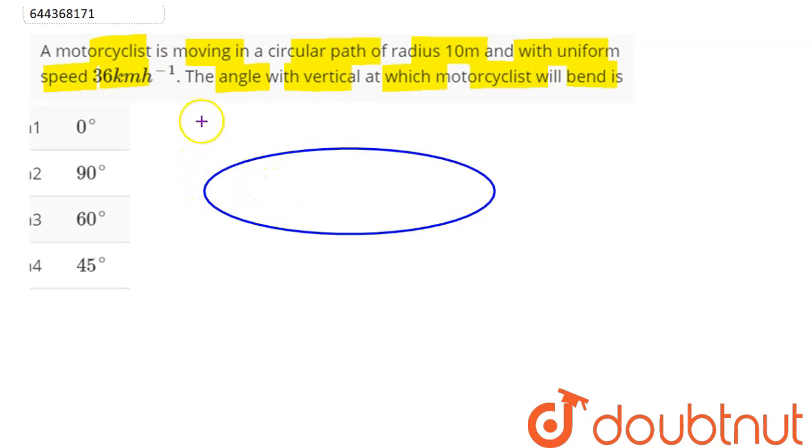Now, with this vertical, at what angle will the motorcyclist bend? We can say the motorcyclist bends in this direction with the vertical. This angle, suppose, is theta. This is the normal reaction N, and this is the motorcyclist.